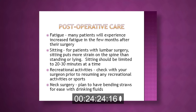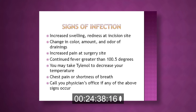With neck surgery, you will have some soreness and may have some hoarseness. Use bending straws at first to help with drinking liquids, then advance to a soft diet as you can. Watch your incision for signs of infection: redness, swelling, increasing pain, pus drainage, or any change in color, amount, or odor of drainage. If you get a fever greater than 100.5 degrees, chills, or anything similar, please call your surgeon right away.